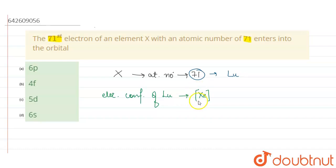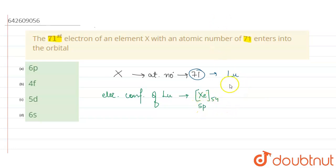54 electrons are filled by Xenon. We have 71 minus 54, which equals 17 electrons left. The last electron of Xenon is in 5p, so the next electron will come in 6s. We have 5p⁶ here. Now we fill 17 more electrons: 6s², filling 2 electrons, leaving 15 electrons remaining.